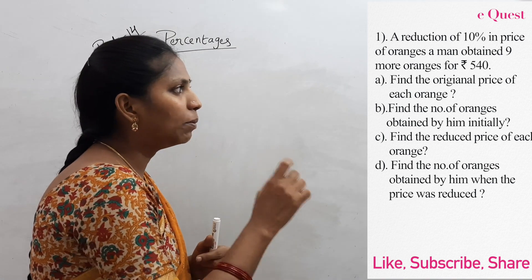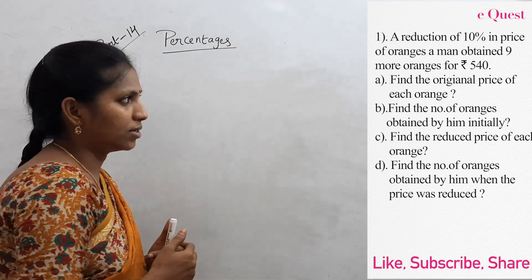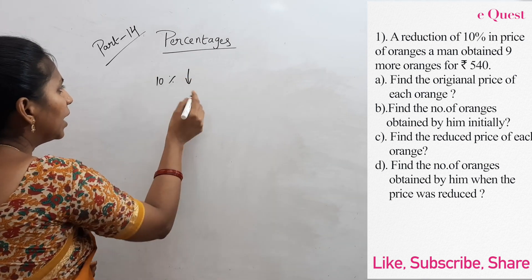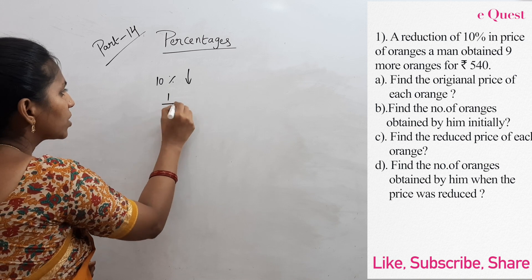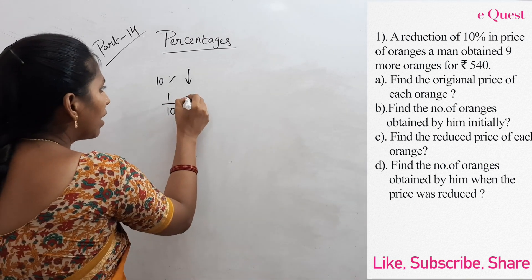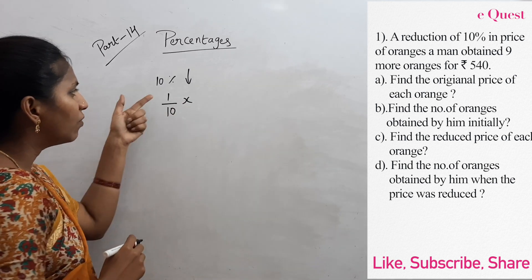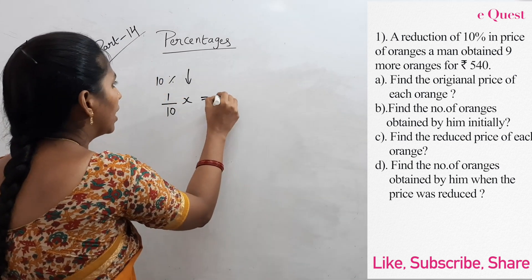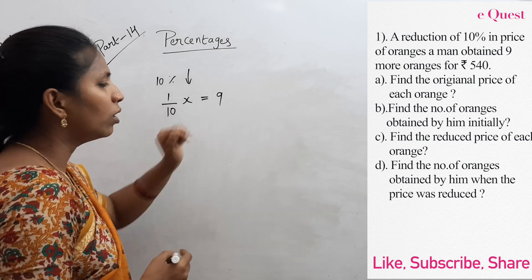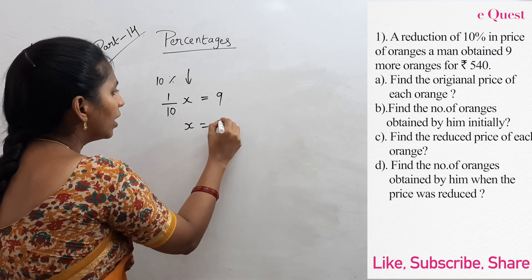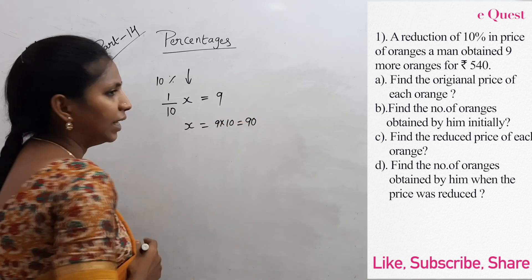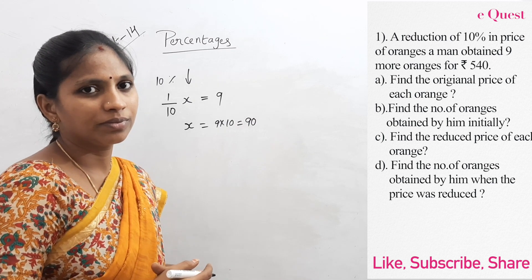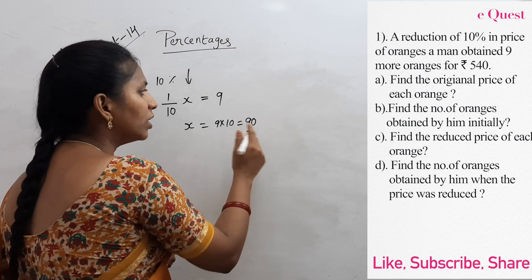A reduction of 10 percentage in the price of oranges. 10 percentage means write in the form of a fraction, that is 1 by 10. Simply write any variable x. So 1 by 10 times x equals 9 more oranges. 1 by 10 x equal to 9, then x equal to 9 into 10 equal to 90. This is the number of oranges after reduction.